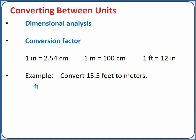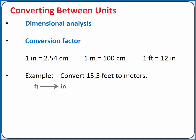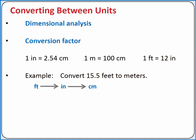Starting with feet, we can convert to inches using 1 foot equals 12 inches. Then we can convert from inches to centimeters using 1 inch equals 2.54 centimeters. Then we'll convert from centimeters to meters using 1 meter equals 100 centimeters.